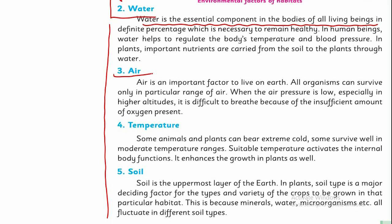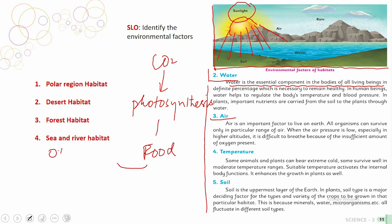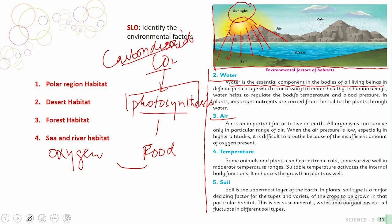The next factor is air. Air is very necessary — we breathe it, animals breathe it. Plants take in carbon dioxide (CO₂) and through the process of photosynthesis they prepare food, and along with the food they also give us back oxygen. You will study this in more detail in later classes.